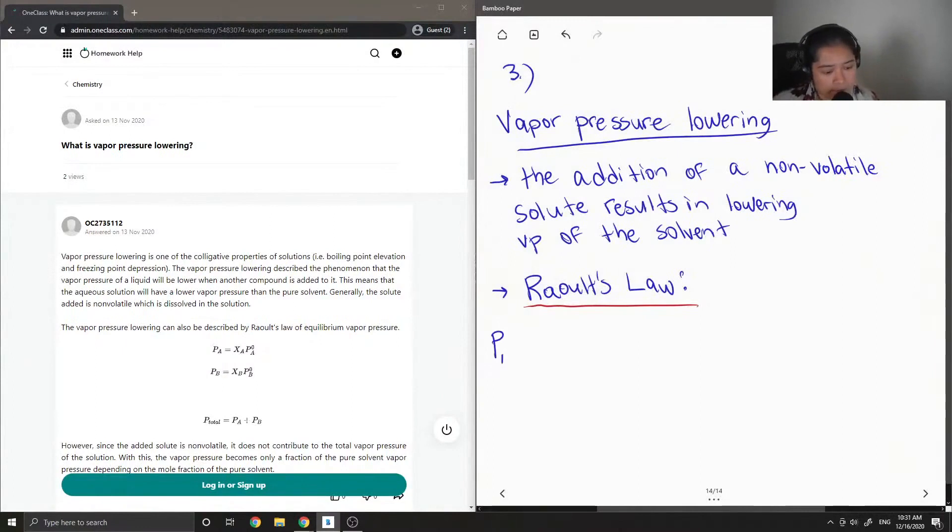For example, the pressure of substance A would be equal to the mole fraction of A times the pressure of A under standard conditions. Similarly, if we had the pressure of B, this is equal to the molar fraction of B times the standard pressure of B.